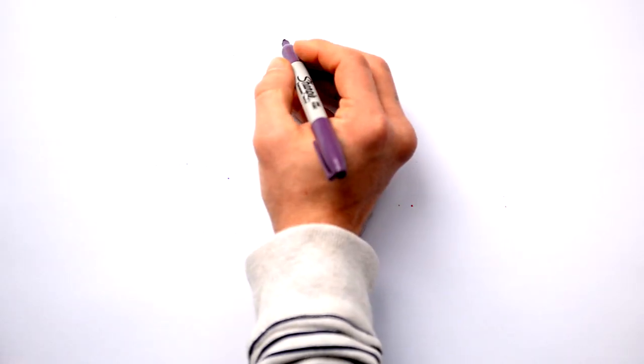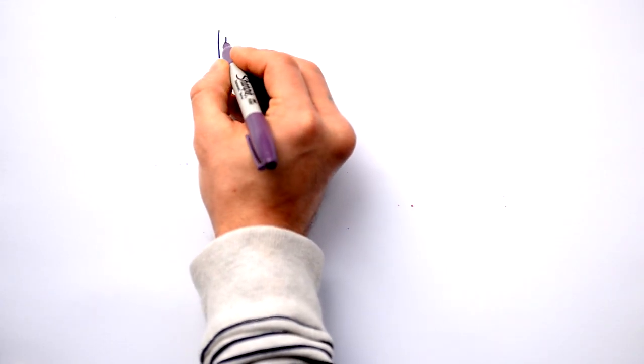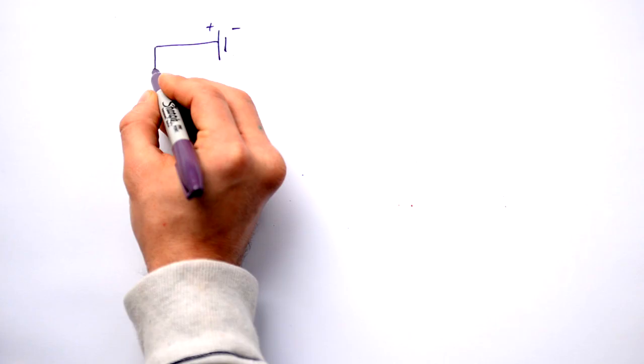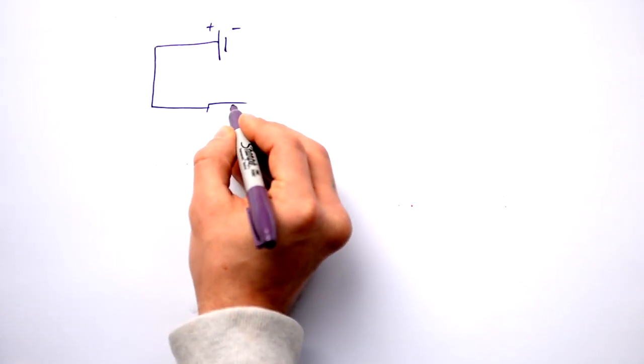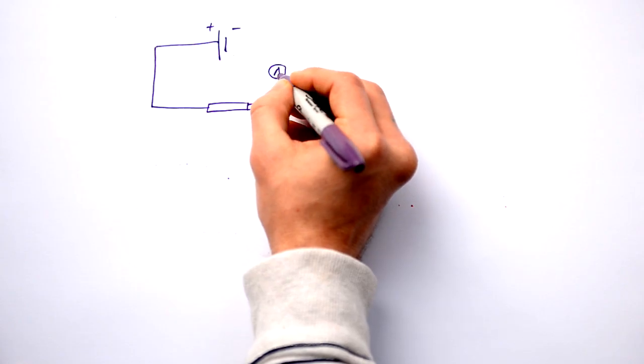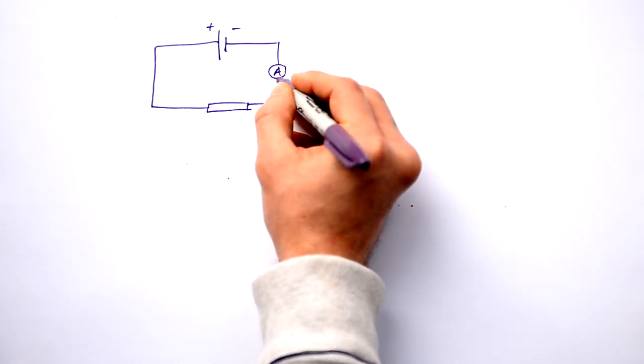Electricity is one of those things that people find tricky sometimes because it's quite conceptual. But by understanding just a few basic ideas, it all becomes very clear. Let's start with a battery and a circuit and an ammeter in it as well.